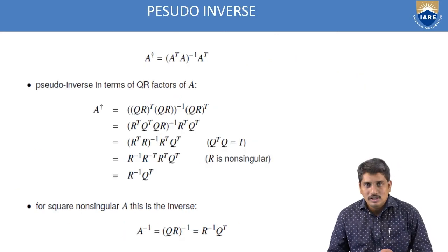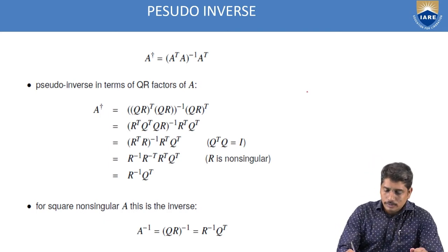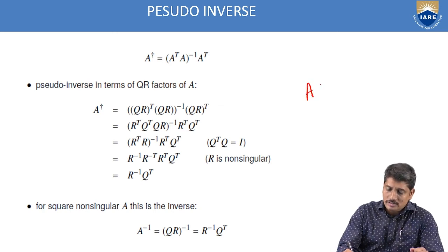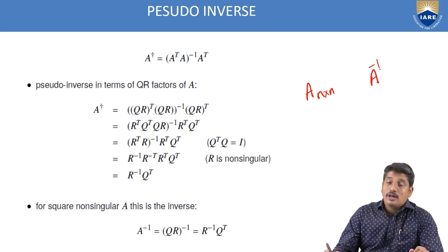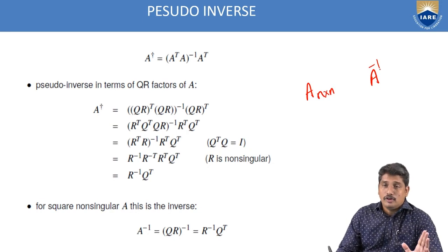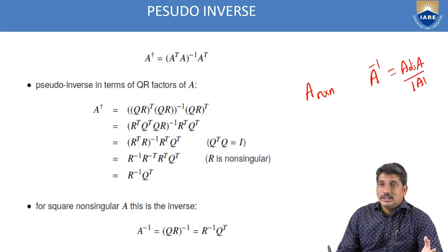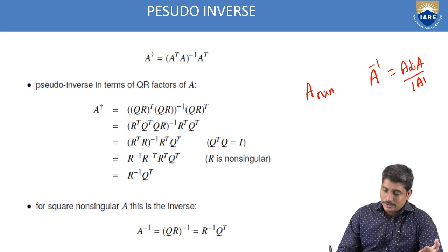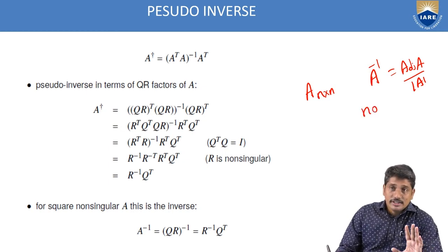Now, what is pseudo-inverse? Let me put a question to you. Suppose A is a square matrix of order n by n — what is A inverse? You can recall that A inverse is the adjoint of A divided by the determinant of A. So the question is: does A inverse exist for each and every matrix? The answer is no — A inverse does not exist for each and every matrix.